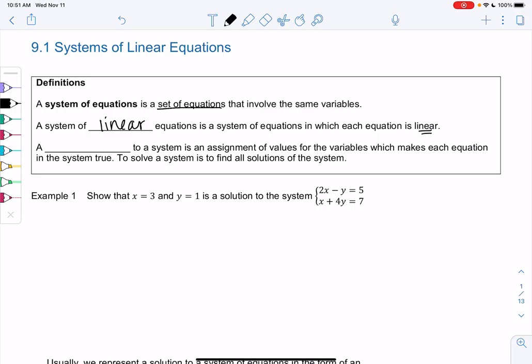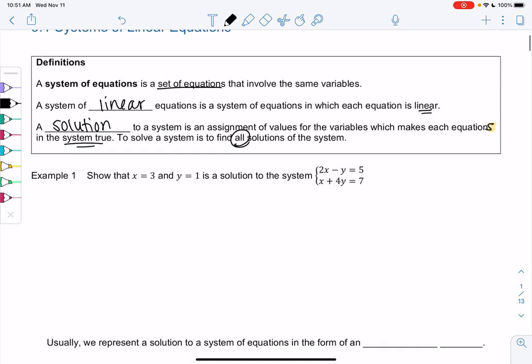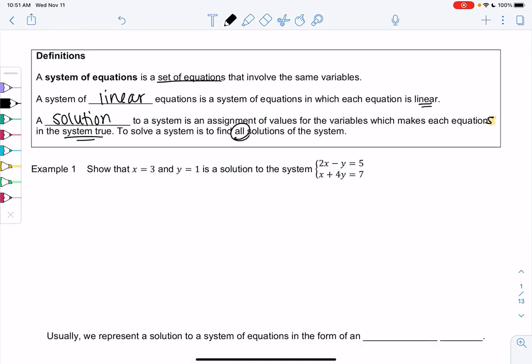A system of linear equations is a system of equations in which the equations are linear. A solution to a system is an assignment of values for the variables which make the equations in the systems true. So all the equations need to be true. And then solving is finding all the solutions, so sometimes there's multiple solutions.